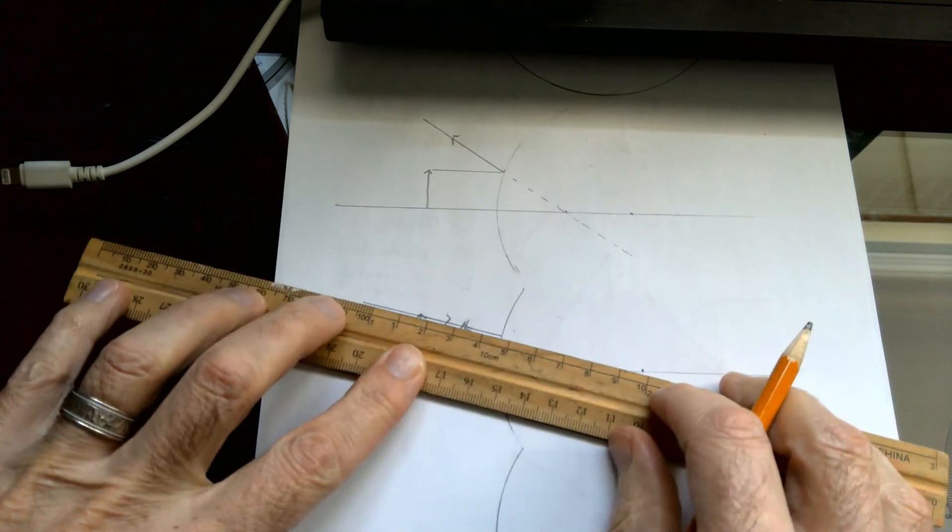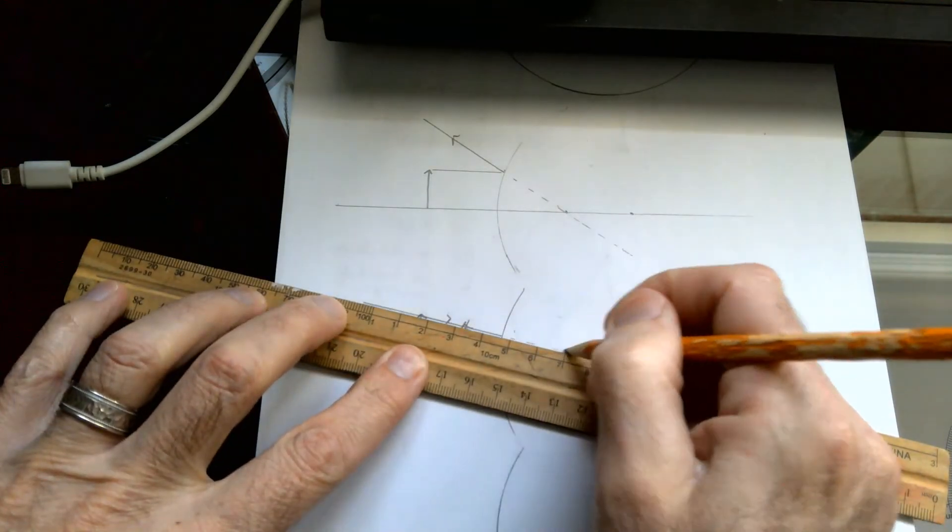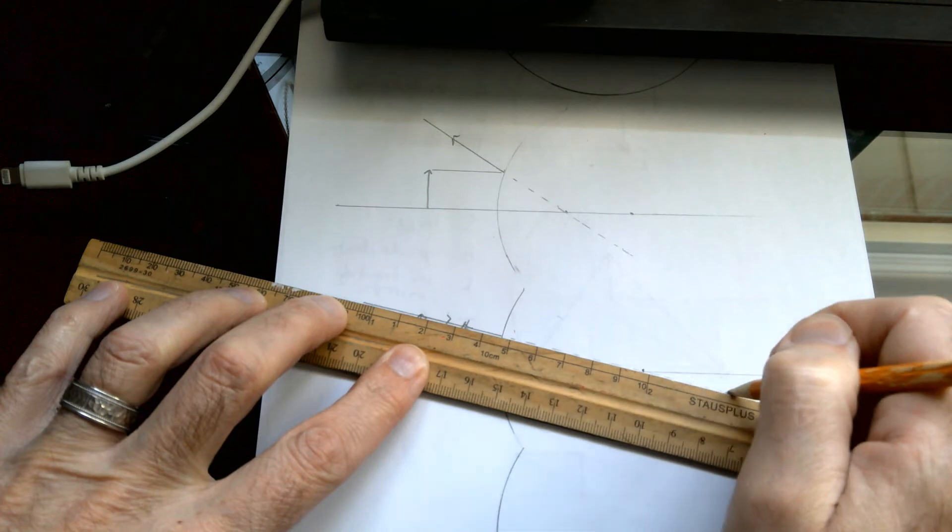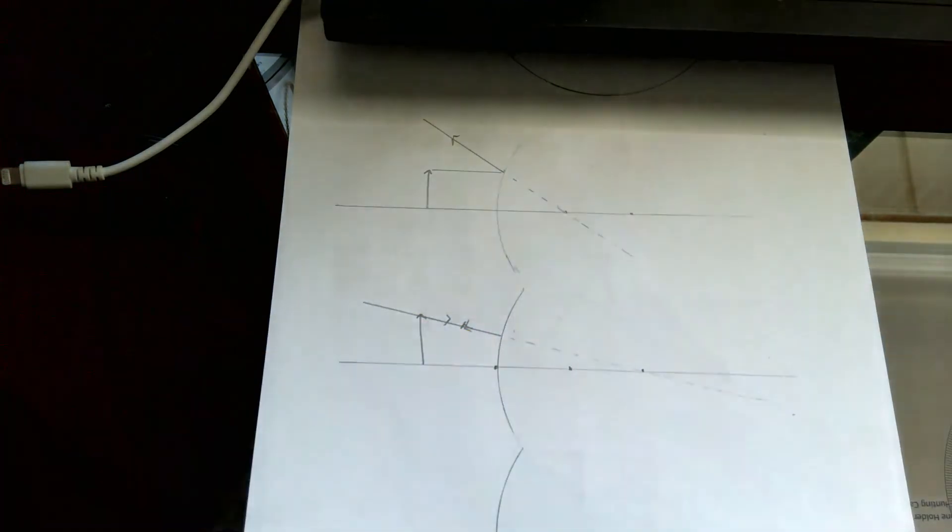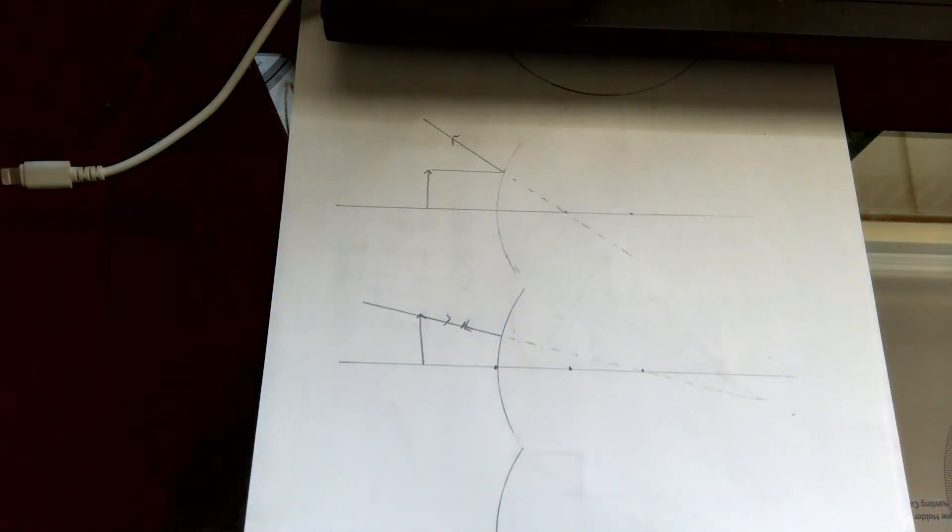If we line that up and draw the virtual line backwards, we will get this.